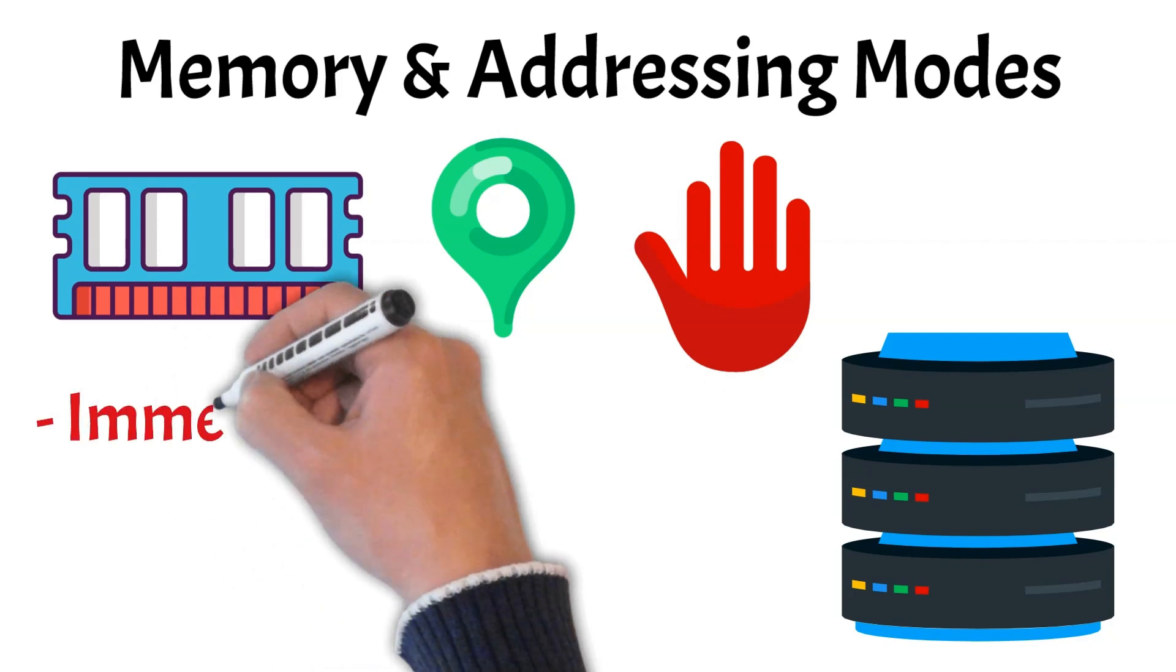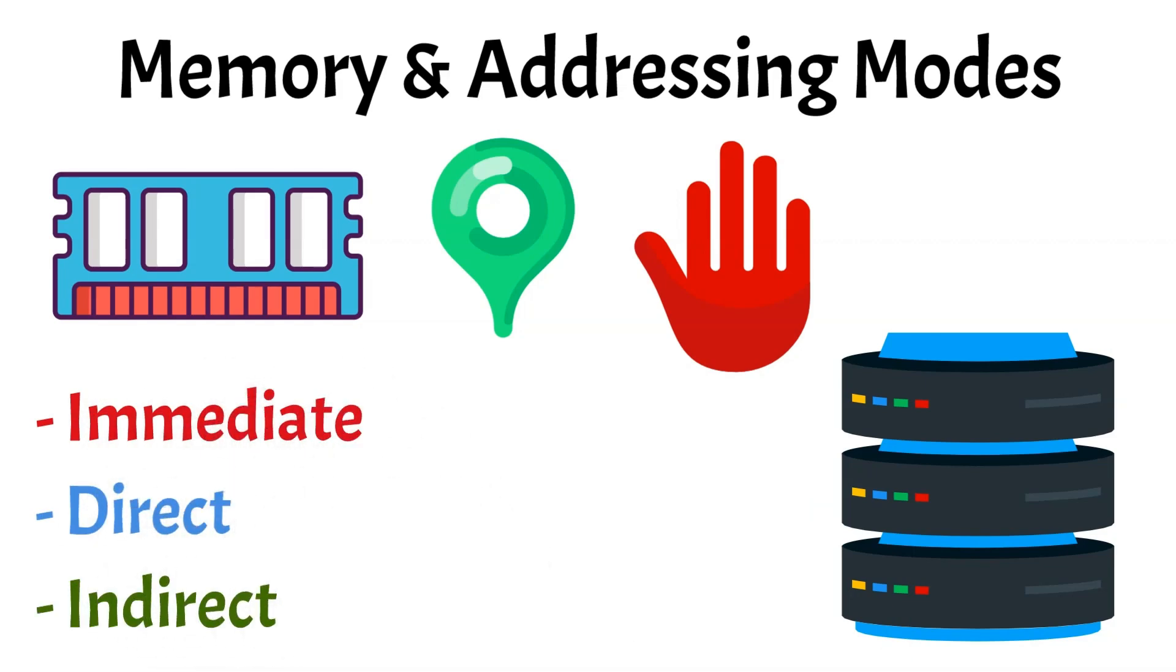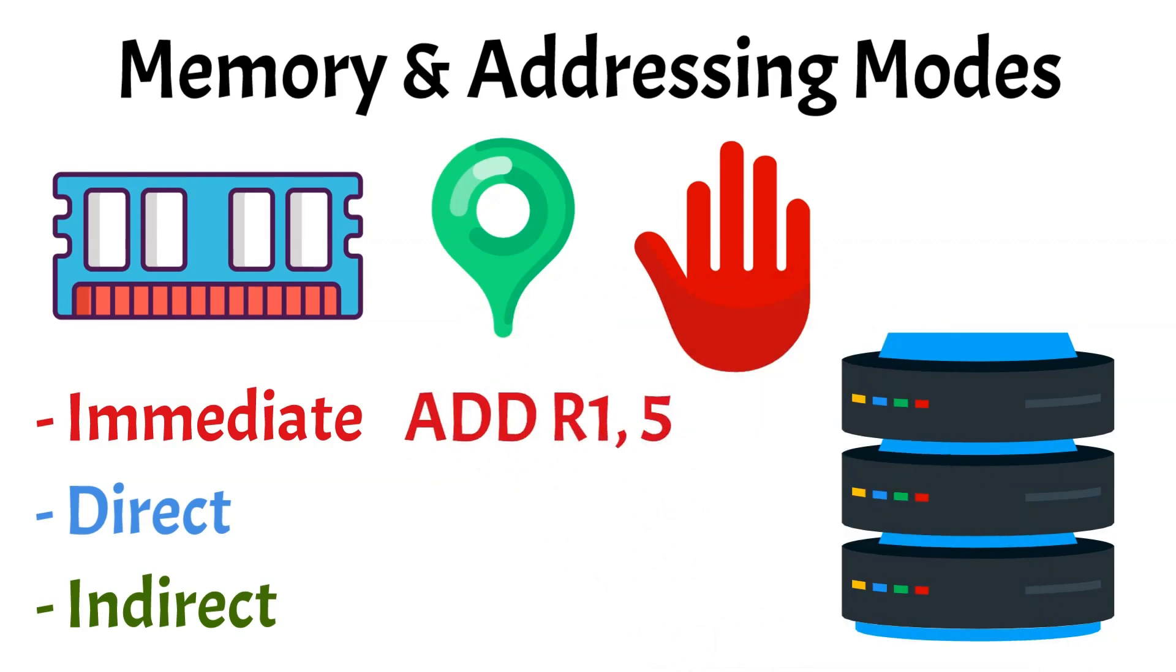Common addressing modes include immediate addressing, direct addressing, and indirect addressing. For example, in immediate addressing, you might use an instruction like ADD R1, 5, which adds the value 5 directly to register R1. In direct addressing, the instruction could be ADD R1, 1000, where 1000 is the memory address containing the value to be added to R1. Lastly, in indirect addressing, you might see ADD R1, R2, where register R2 holds the address of the value to be added to R1.